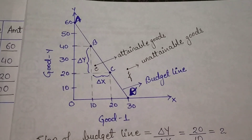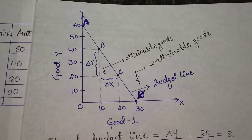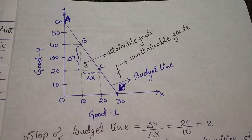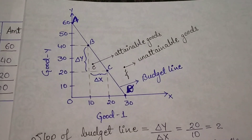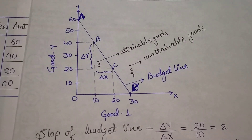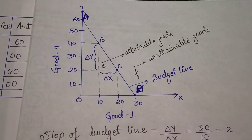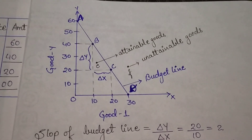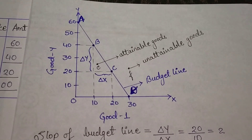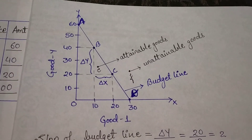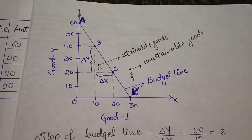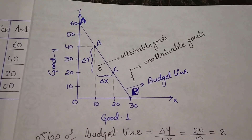Points A, B, C, D on the budget line are combinations of goods we are purchasing. I have also drawn point E inside the budget line and point F outside. Point E indicates budget set - if you want to spend 50 rupees you can. Point F outside the budget line means if you want to spend 70 rupees you can't - F is unattainable and E is attainable.